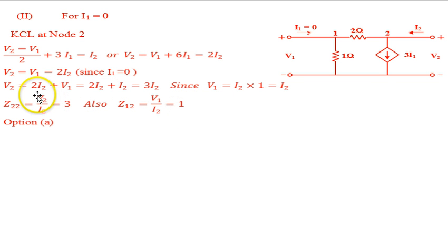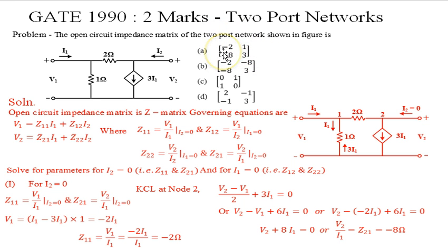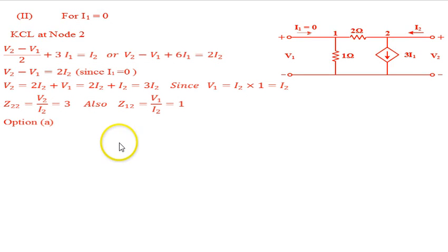We have found all four impedance parameters: Z11 = minus 2, Z12 = 1, Z21 = minus 8, Z22 = 3. The resulting open circuit impedance matrix is [−2, 1; −8, 3], which corresponds to option A — the correct answer for this problem.